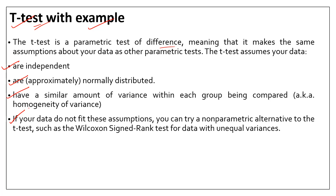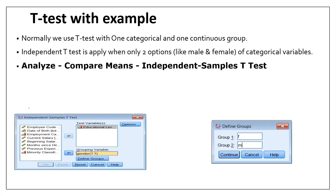If you remember in our chi-square test, both variables must be categorical — either nominal, like gender and color preference, or ordinal, or a mix of nominal and ordinal. But in the case of the t-test, let us talk first about the independent t-test.